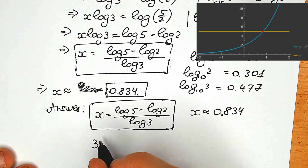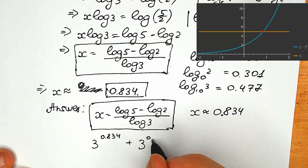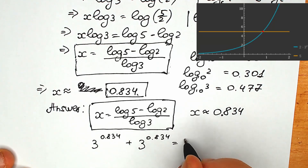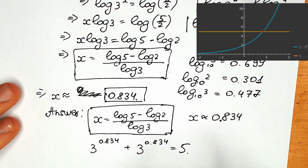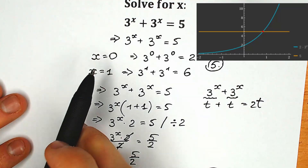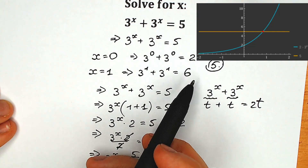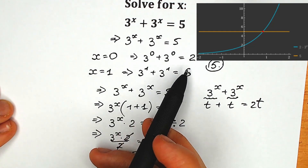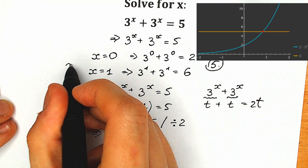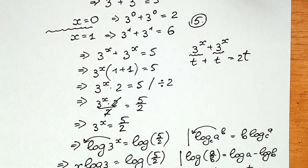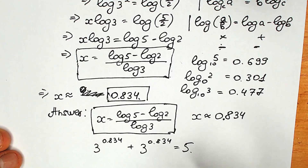So we're going to check it: 3 to the power 0.834 plus 3 to the power 0.834 equals 5. And this confirms our answer. In the beginning, we found that when x equals 0 we get 2 (less than 5), and when x equals 1 we get 6 (greater than 5), so our answer must be between 0 and 1. And indeed, 0.834 is our correct answer.